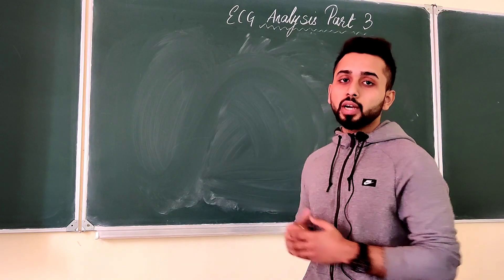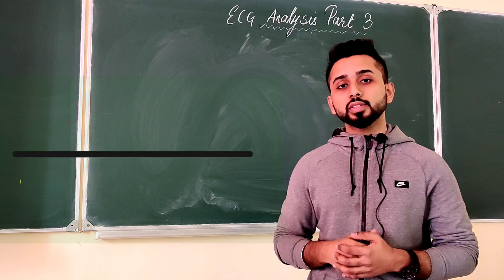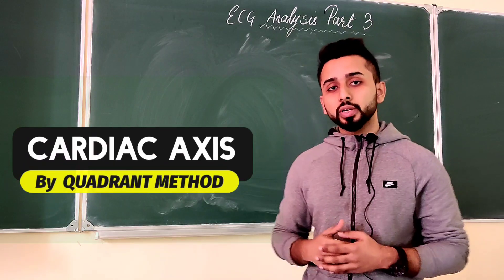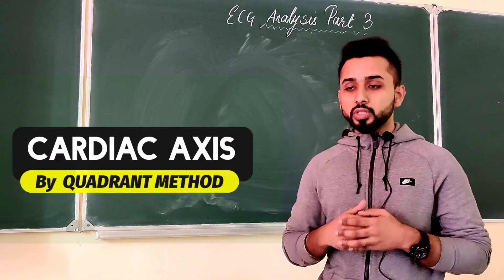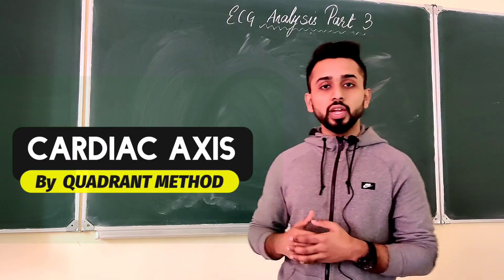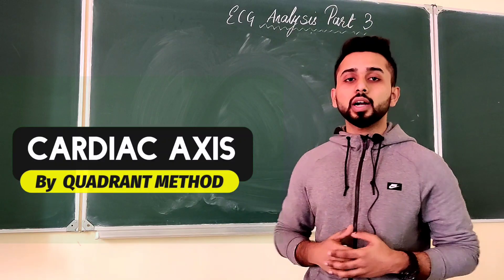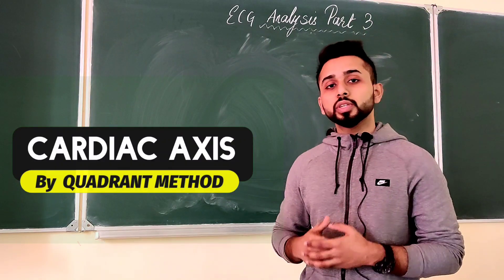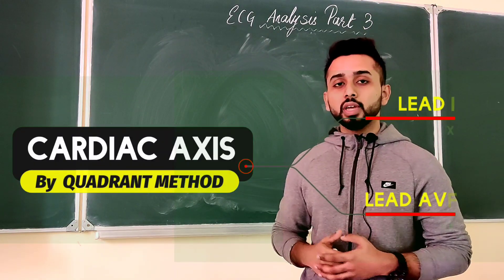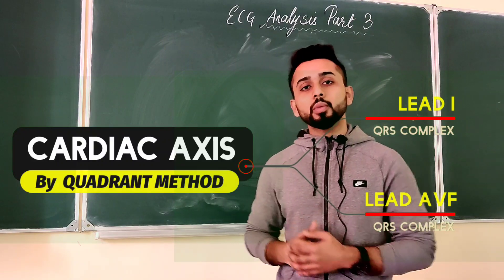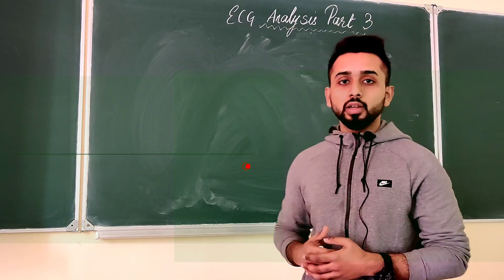In this part, we'll talk about the calculation and measurement of cardiac axis by using the quadrant method, which I believe is the most efficient way to estimate the electrical axis of the heart using two leads: Lead 1 and AVF. And by the end, I'll also show you a few abnormal rhythms of the heart. So let's begin.